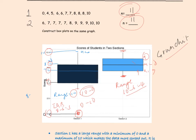Now let's look at section 2. In the second section the minimum is 6, the maximum is 10, the median is 8, the lower quartile is 7, and the upper quartile is 9. The range is the maximum minus the minimum, which equals 4. All scores range from 6 through 10, which shows that the performance of the second section was much better than the first.